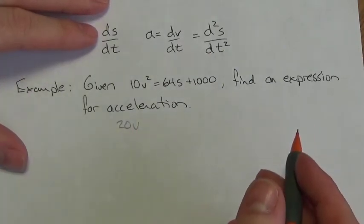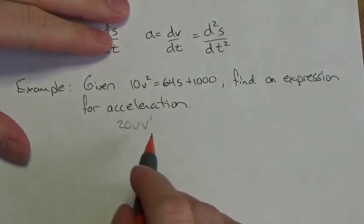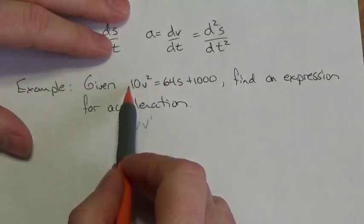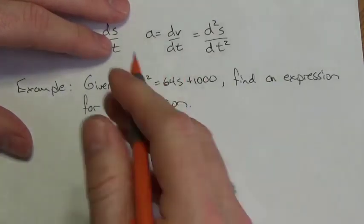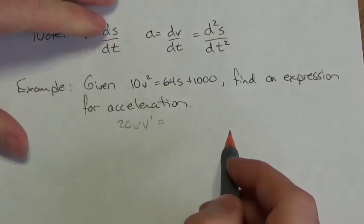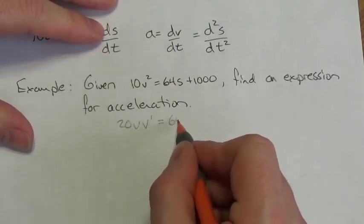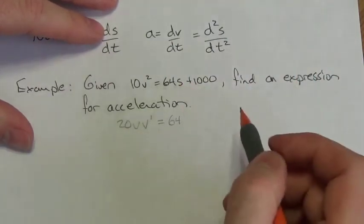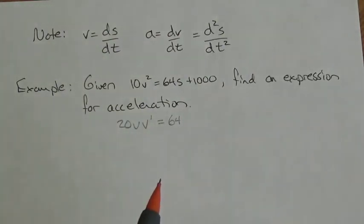I don't know what that derivative is, but I have to include it. So the implicit derivative gives: bring down the 2, getting 20v multiplied by the derivative of v. On the right-hand side, the derivative of 64s — s stands for displacement — is 64 times s to the 0, which is 1, times the derivative of s. Because s is not the independent variable, t is, I need to include the derivative of s. The derivative of 1000 is 0, it goes away.